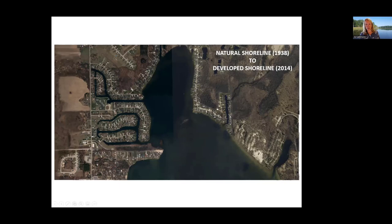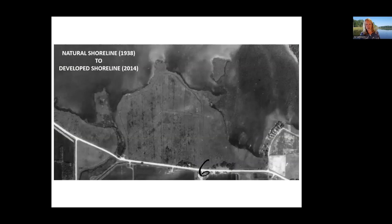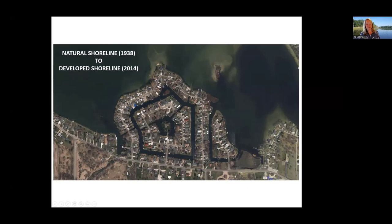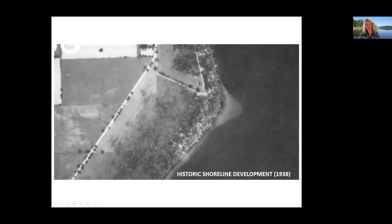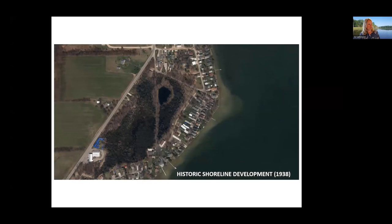Another aerial example from 1938 shows natural shoreline with wetland areas and a stream. By 2014, all these channels were built — trying to create as much waterfront property as possible. A third example shows that even a shoreline already somewhat developed in 1938 now has houses lined up, and you can see seawalls making that shoreline very neat — which may prevent some erosion but certainly eliminates any natural habitat.